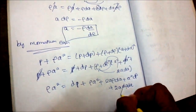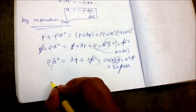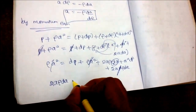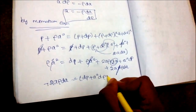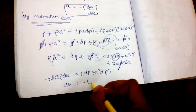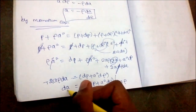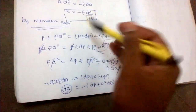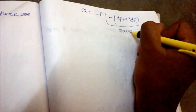Canceling the higher-order term dA·dρ, we have 2AρdA = −(dP + A²·dρ), so dA = −(dP + A²·dρ) / (2Aρ). Substituting this expression for dA into the continuity equation result A = −ρ·dA/dρ.